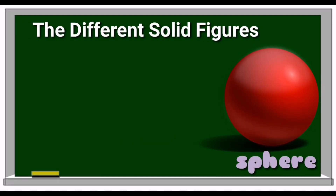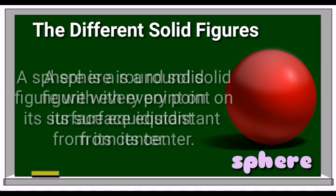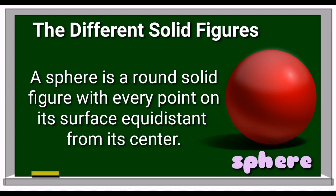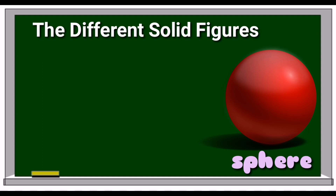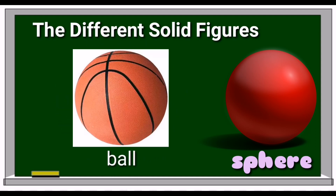Let me discuss the different solid figures. The first one is sphere. A sphere is a round solid figure with every point on its surface equidistant from its center. An example of an object that resembles a sphere is a ball.